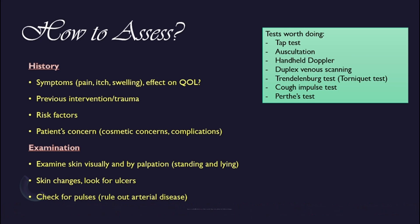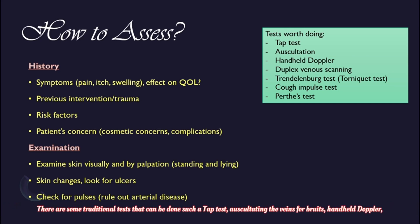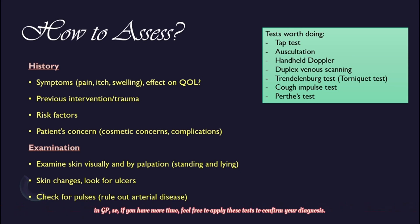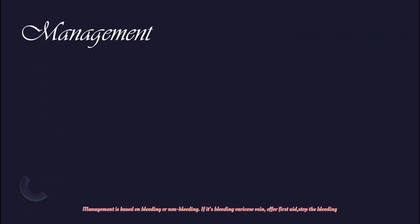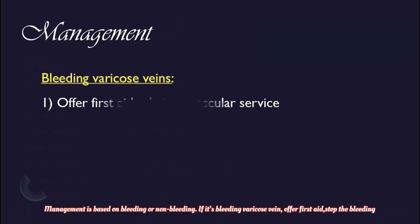There are some traditional tests that can be done, such as the tap test, auscultating the veins for bruits, handheld Doppler, duplex venous scanning, Trendelenburg test, cough impulse test, and Perthes' test. Sometimes time is very limited in general practice, so if you have more time feel free to apply these tests to confirm your diagnosis.